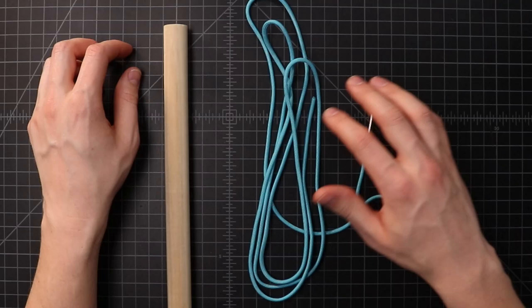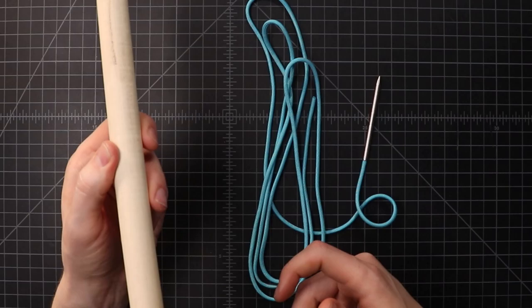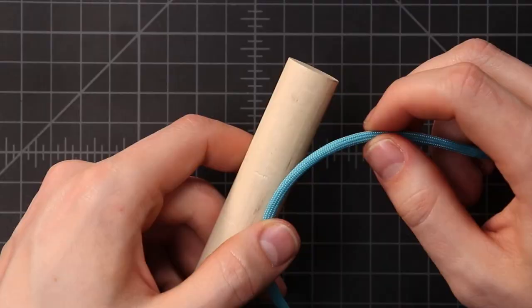So to make this knot you're only gonna need about six feet of paracord, type III FID, and something to wrap it around that's about an inch wide. I've got a wooden dowel.